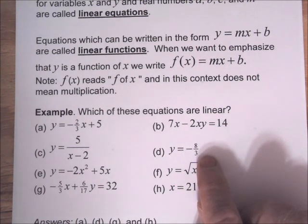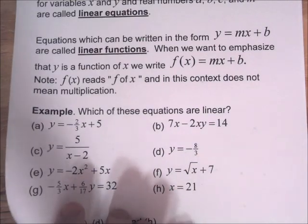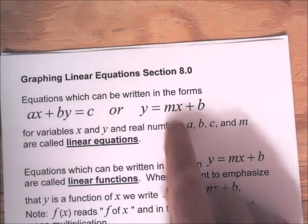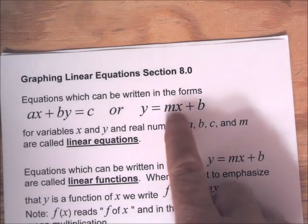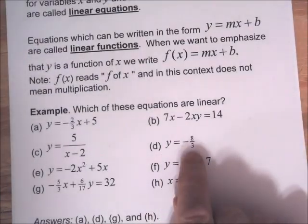D is linear. If M is zero, it fits this form here. We can write this as Y equals zero X plus negative eight-thirds. So it can be written in the form Y equals MX plus B. So part D is linear.